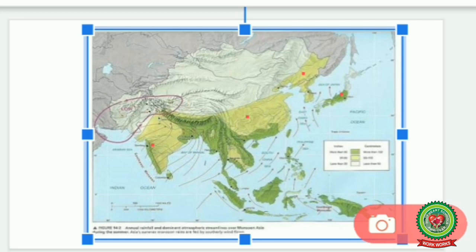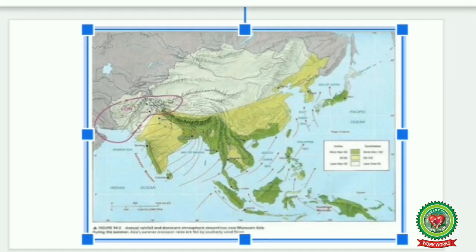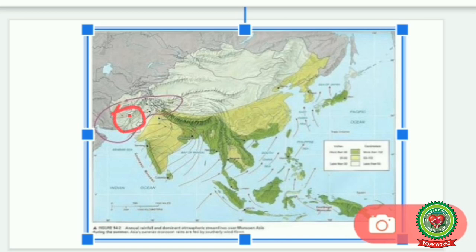South and Central China, India, Japan, and Northern China and Korea receive rainfall from 100 to 200 centimeters. The western part of Asia, the central part of Asia, and Siberian Asia receive very less rainfall.